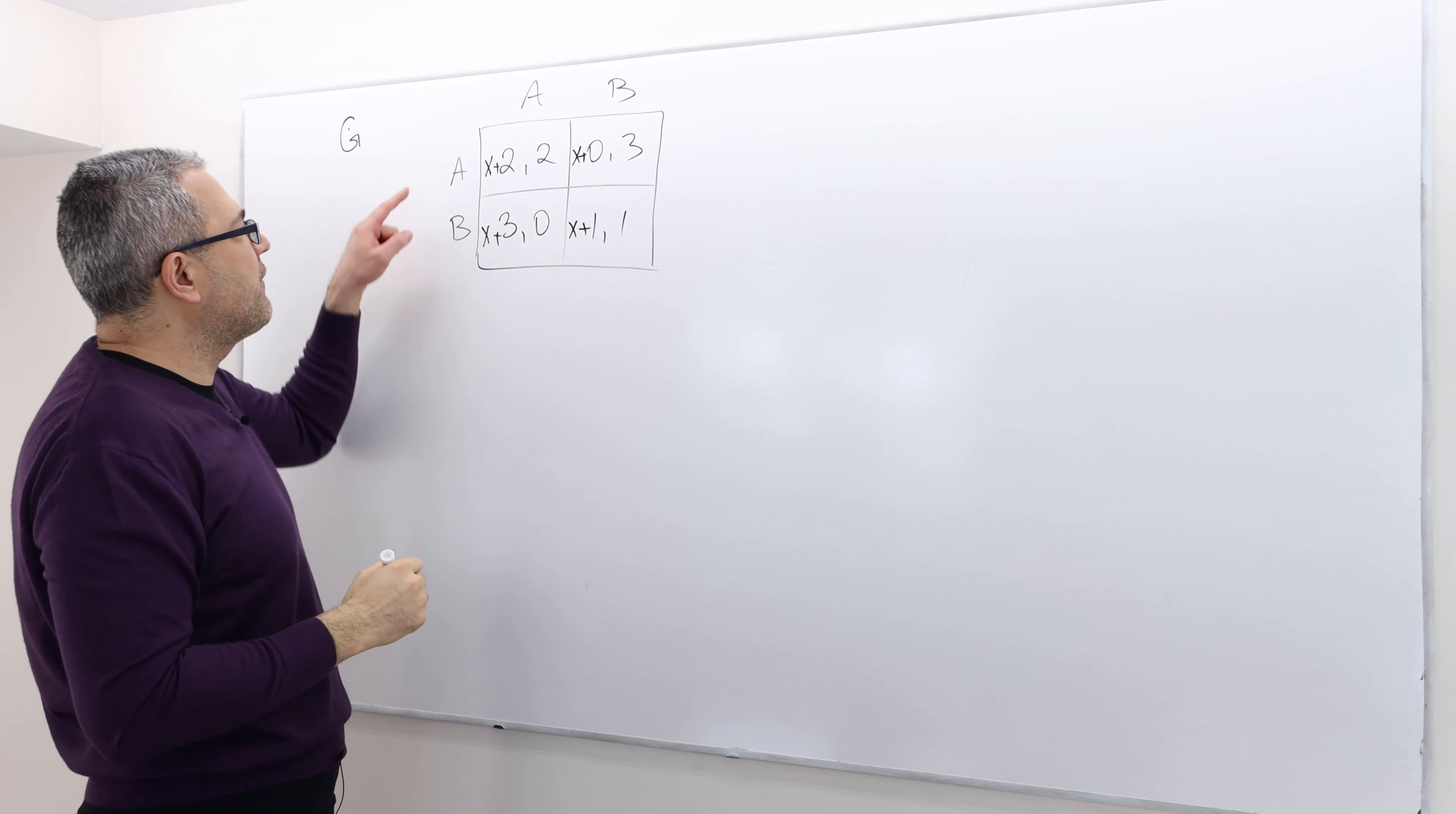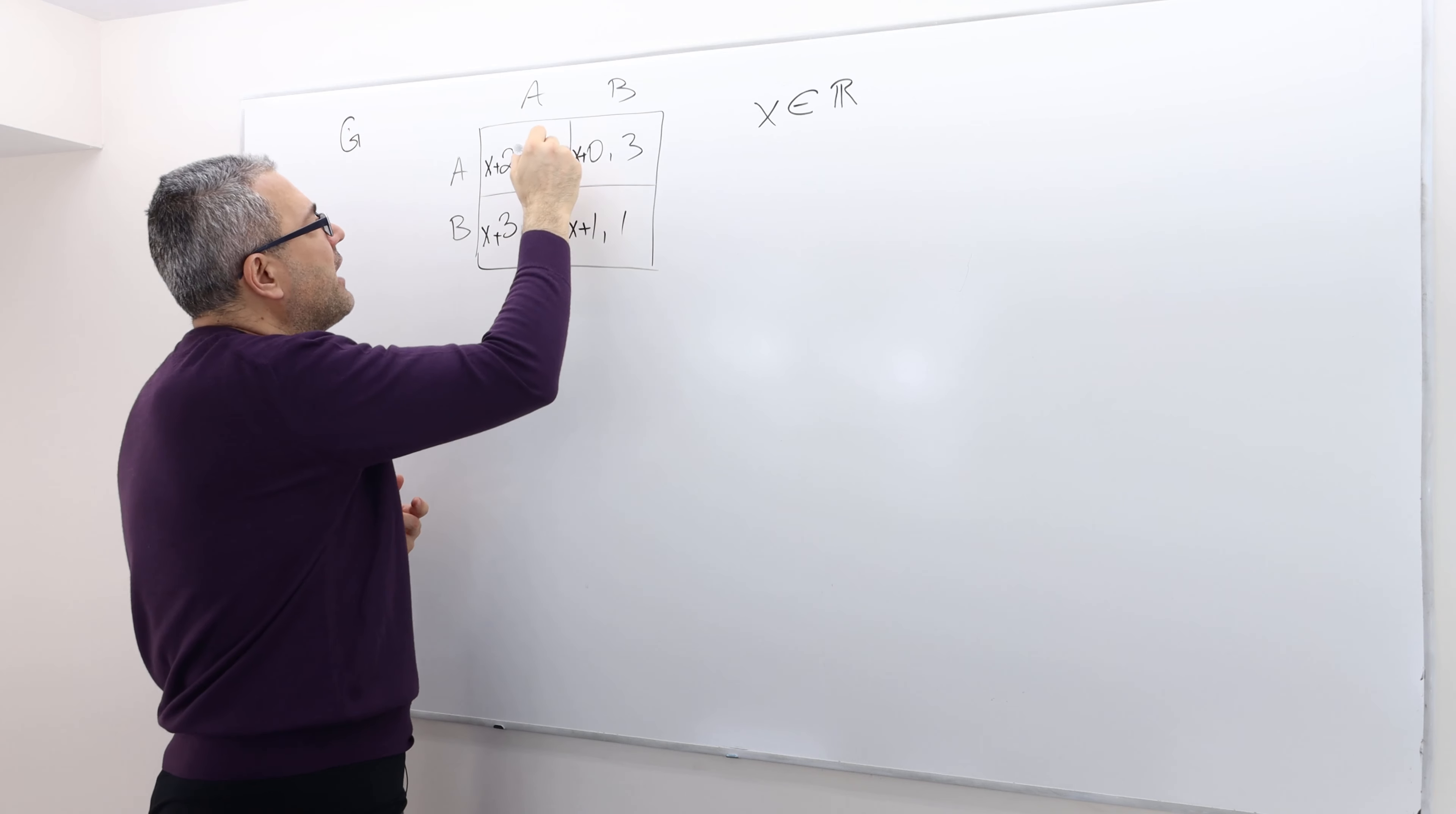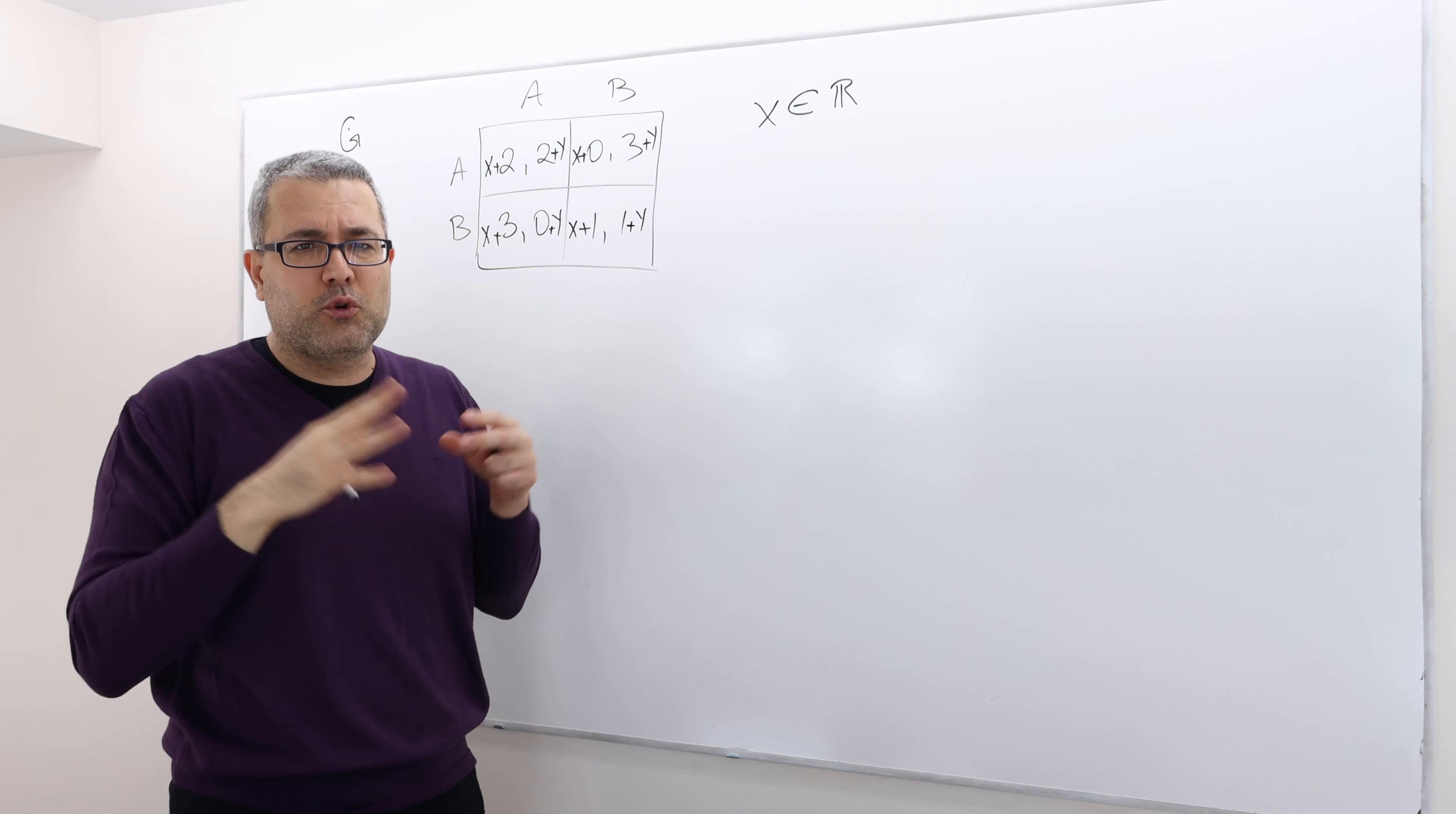So this is what I mean. So whatever the strategy profile is, add X. Is X positive or negative? Really doesn't matter. It's just some real number. And if you like, add Y to player two. But again, you have to do it uniformly, meaning you have to add Y to all possible strategy profiles.